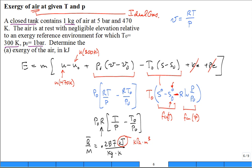I'm going to give you the final answer. The exergy of the air is 66.5 kilojoules and you should be able to fill in the details and get that answer.